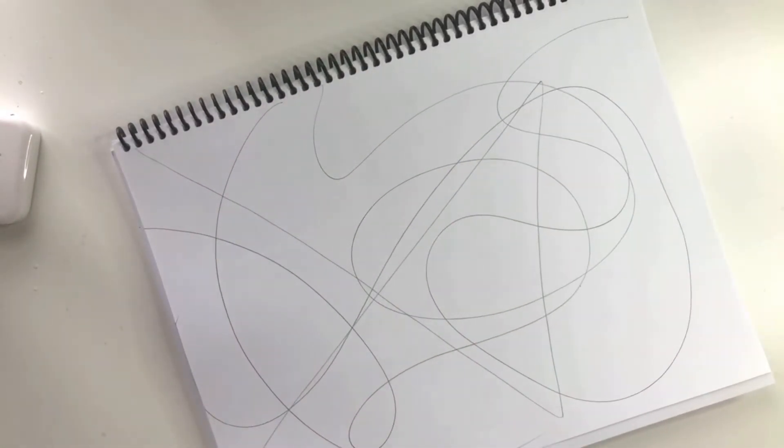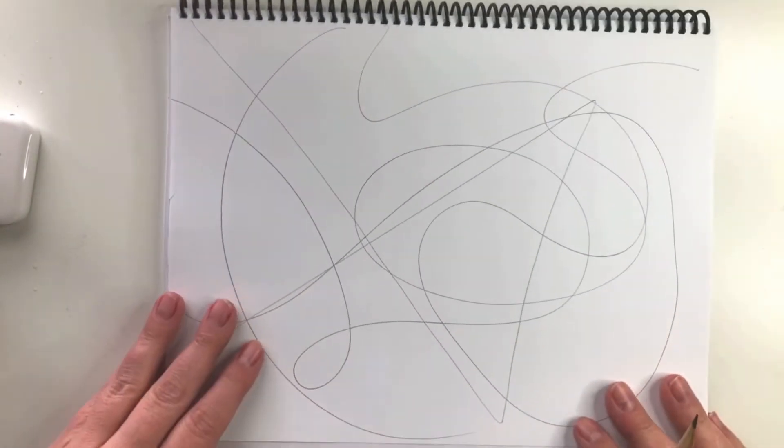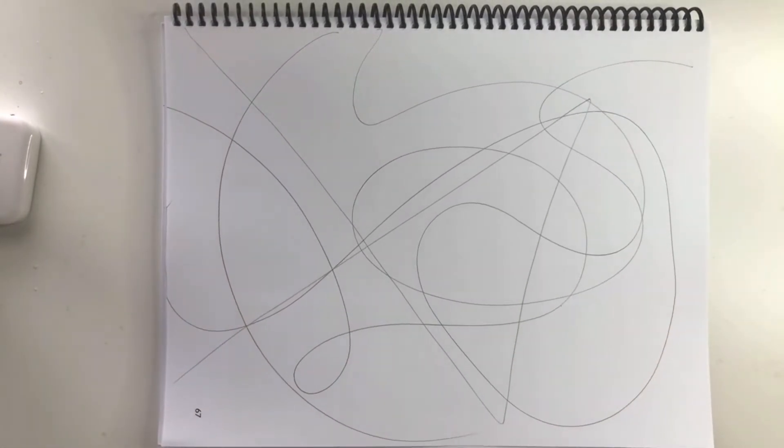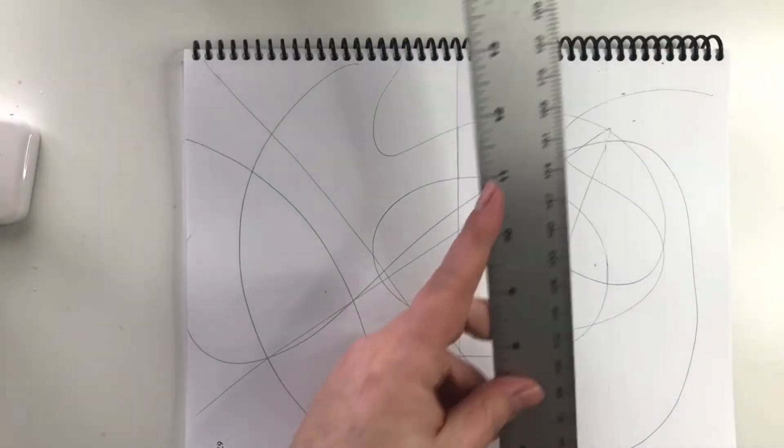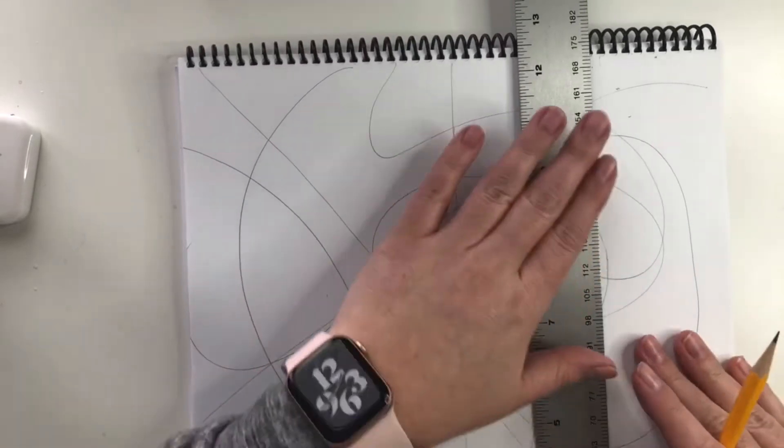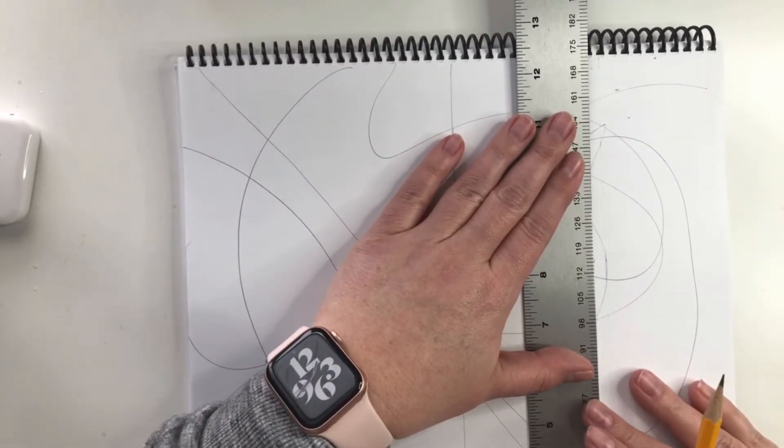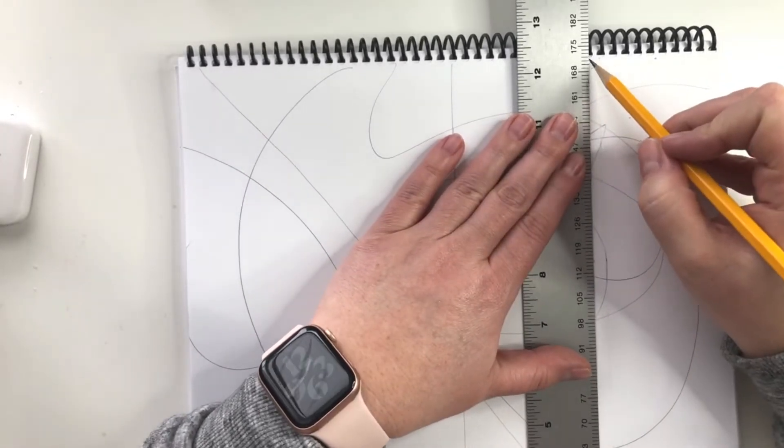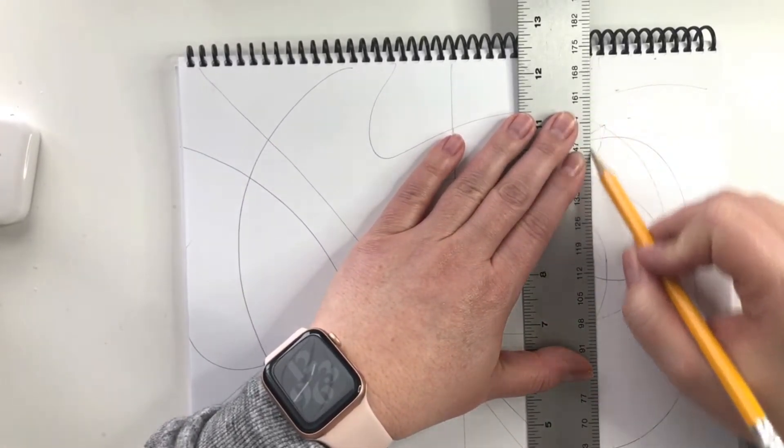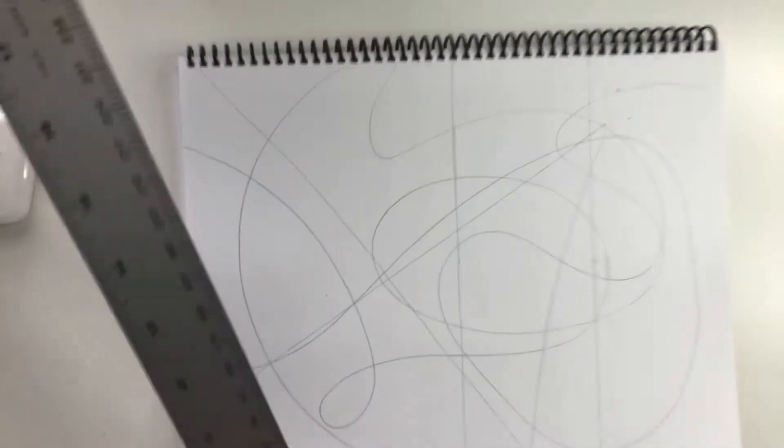Then we're going to take our ruler and divide this into eight equal rectangles. So you will need to measure this out and then draw your lines.